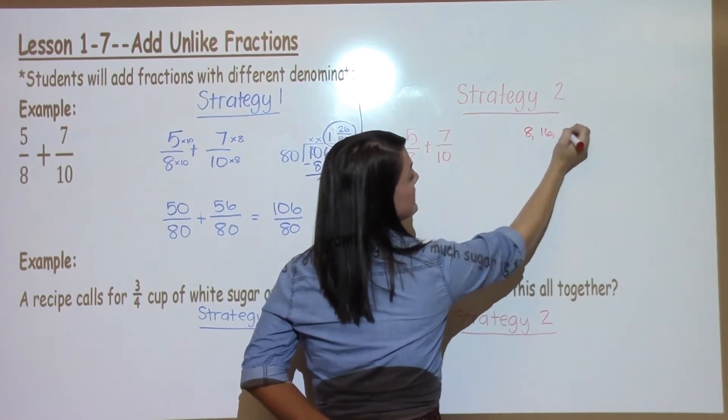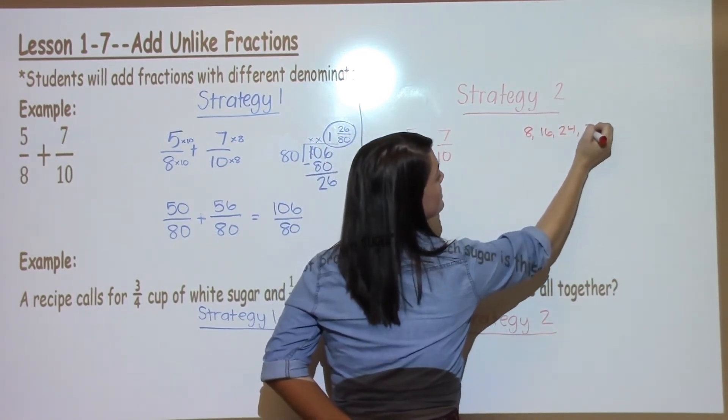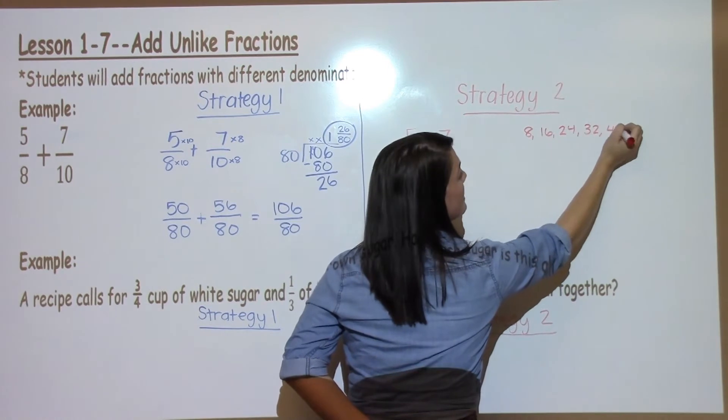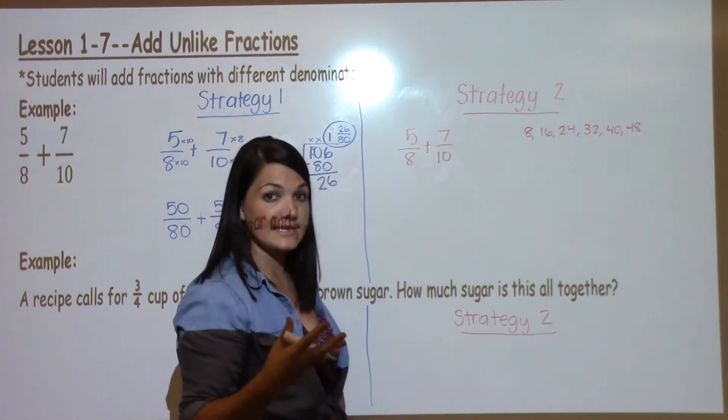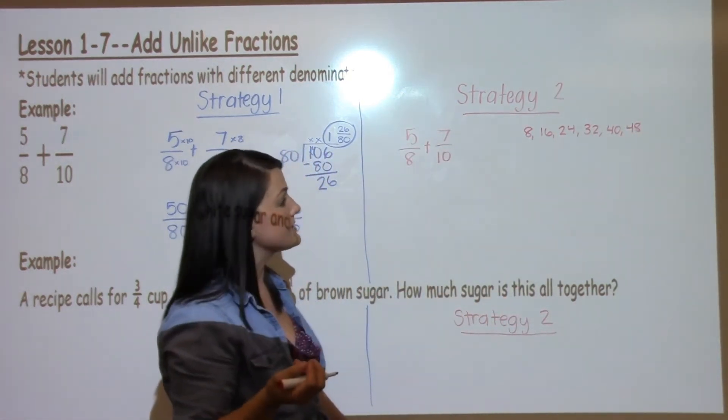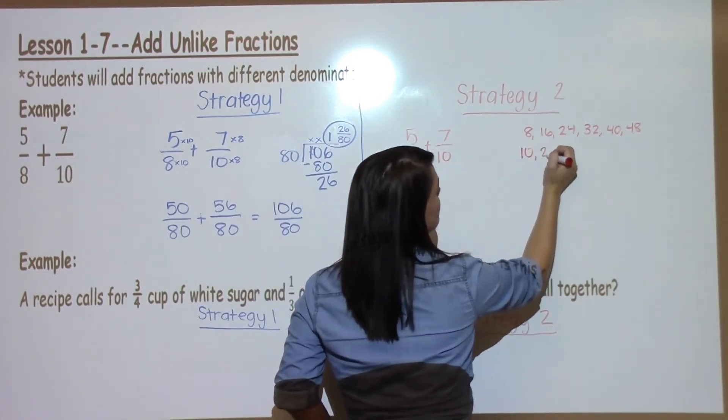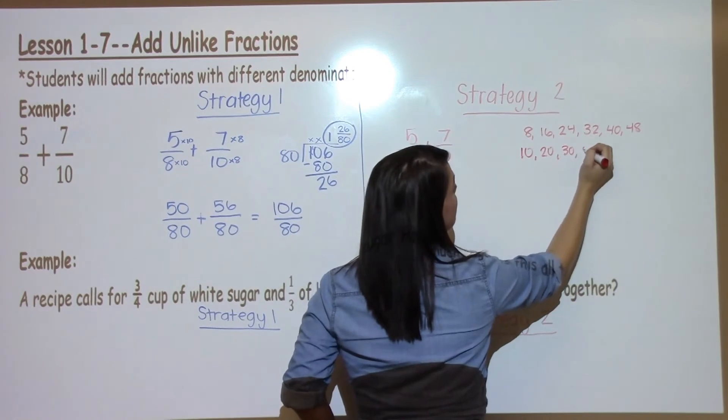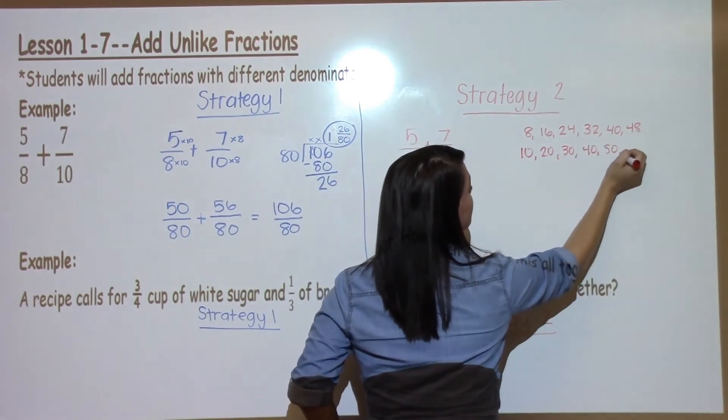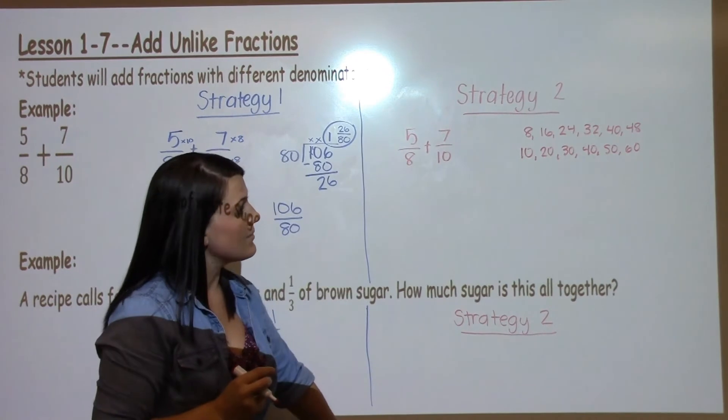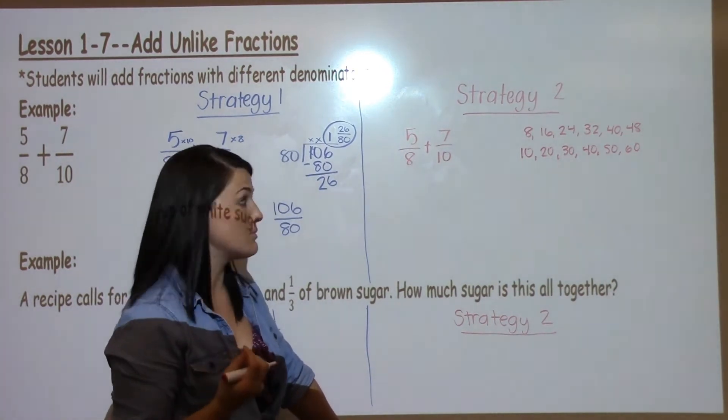To do that, I'm going to count by 8s: 8, 16, 24, 32, 40, 48. I usually count out about 6 factors to help me find the least common multiple. Then I count by 10s: 10, 20, 30, 40, 50, 60. I then look for the number that they have in common that is the smallest.